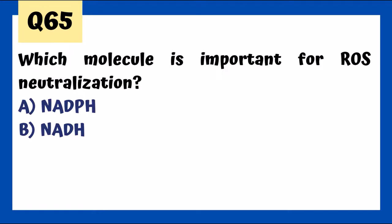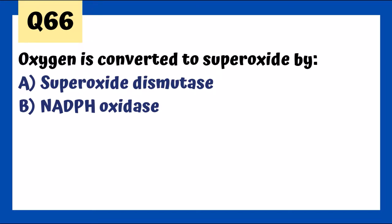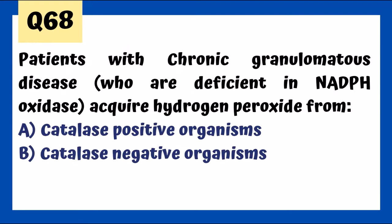NADPH is required for NADPH oxidase and for regeneration of glutathione. NADPH oxidase converts oxygen to superoxide. When NADPH oxidase is deficient — as in chronic granulomatous disease — patients acquire hydrogen peroxide by stealing it from catalase-negative pathogens. They can't steal it from catalase-positive organisms because those break down their own hydrogen peroxide.